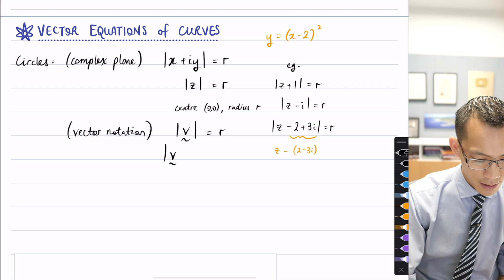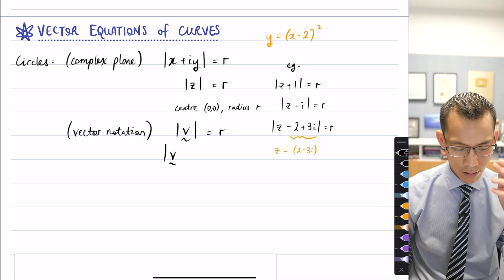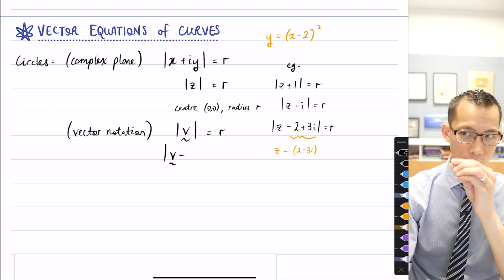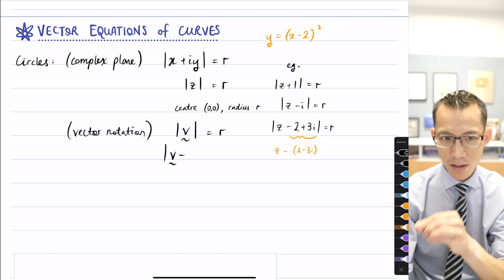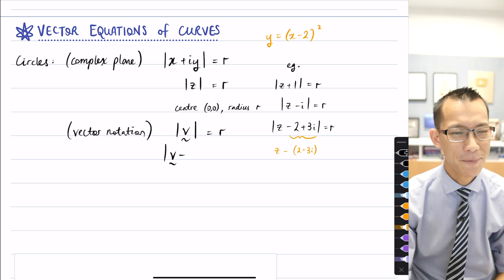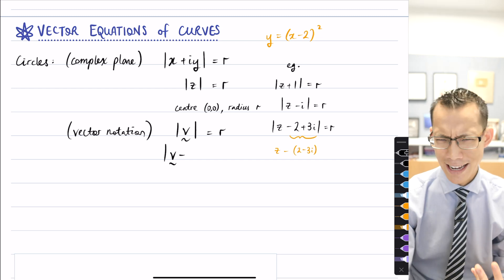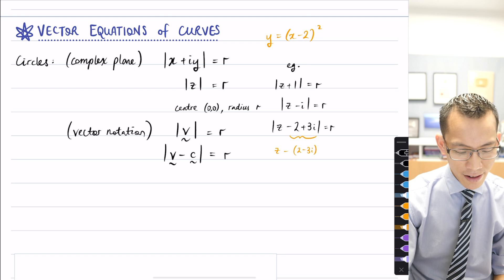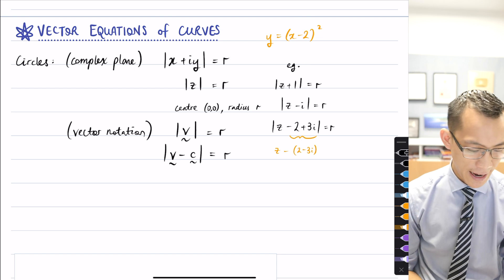So if I were to generalize, I would say again, there's some vector which we're measuring the distance to, and then you just subtract the position vector that corresponds to wherever you want your center to be. And because it's a center, we tend to, by convention, just call it c. So that, again, is going to be equal to our radius.